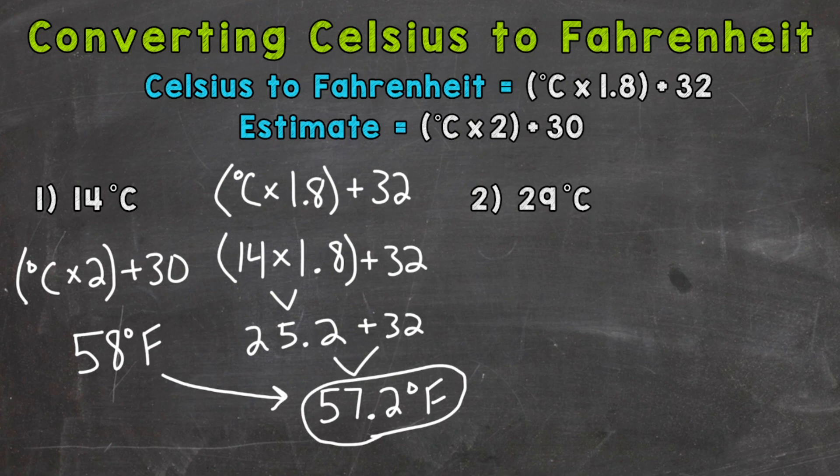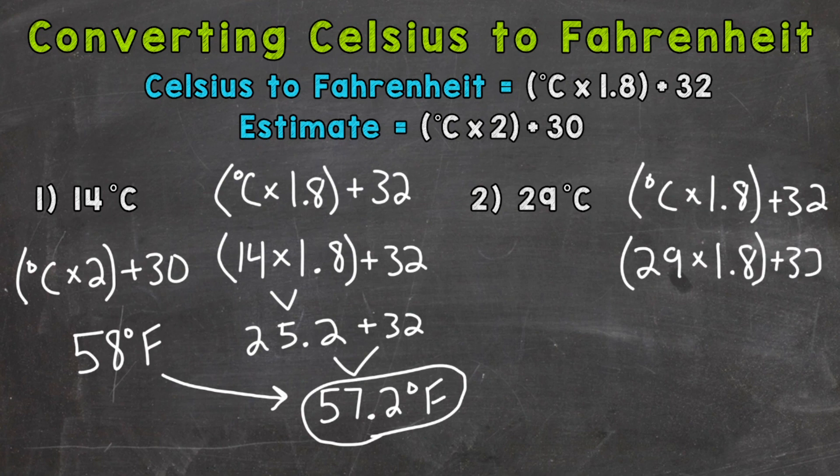On to number two, where we have 29 degrees Celsius. Let's write out our formula. Degrees Celsius times 1.8 plus 32. So we plug in what we're given and what we want to convert, which is 29 degrees Celsius times 1.8 plus 32.